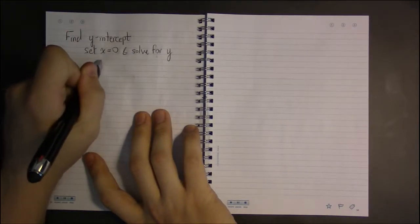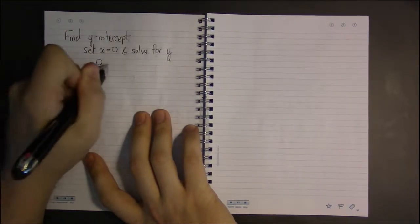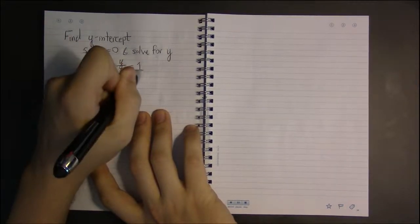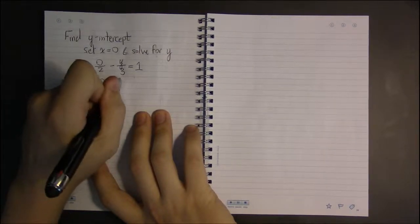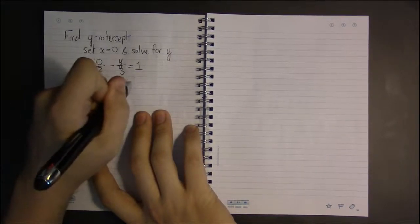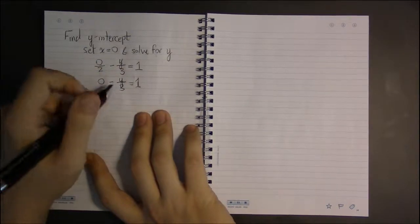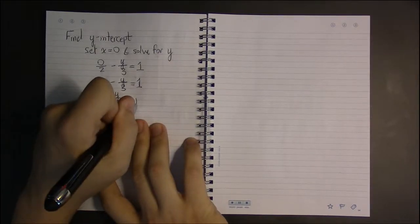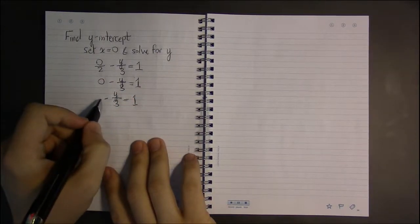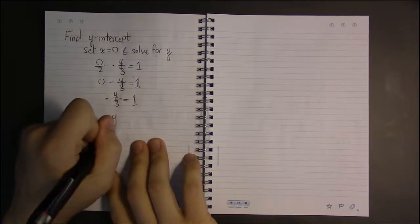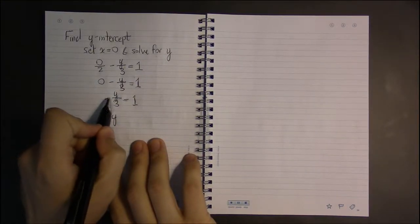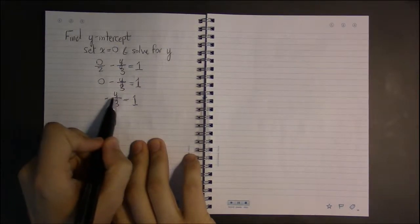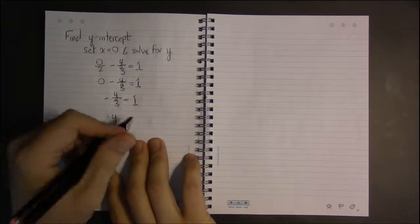So in this case, setting x equal to 0, we're going to have 0/2 - y/3 = 1. Well, 0/2 is just 0. 0 - y/3 is just -y/3. And if we multiply both sides by -3, -3 times y over -3, negative times a negative will be a plus, and 3 divided by 3 is just 1, so it leaves me with just y. -3 times 1 is -3.